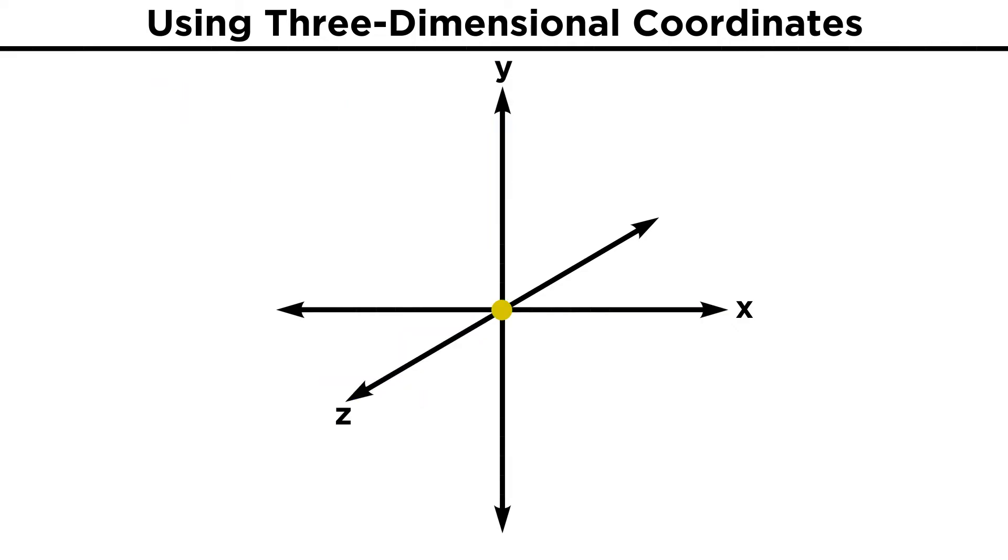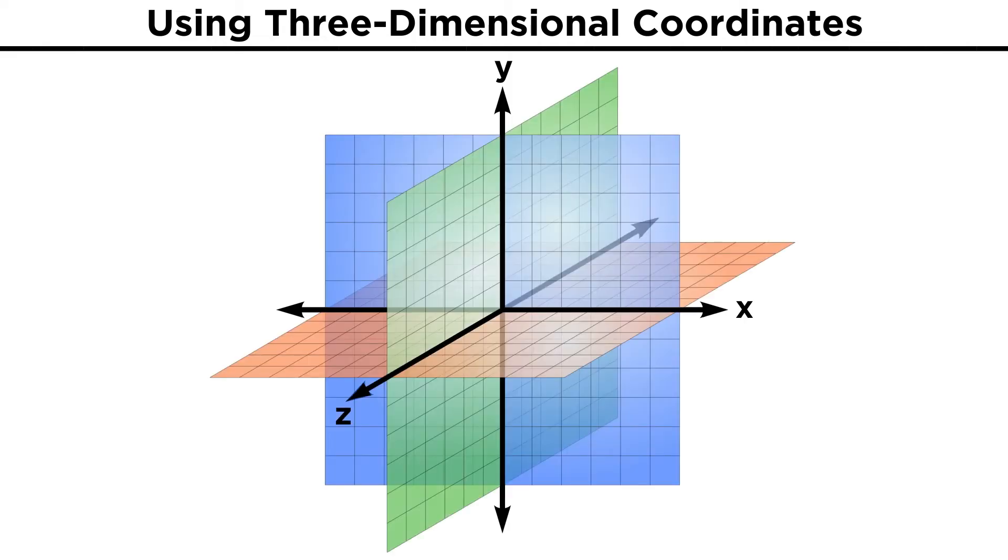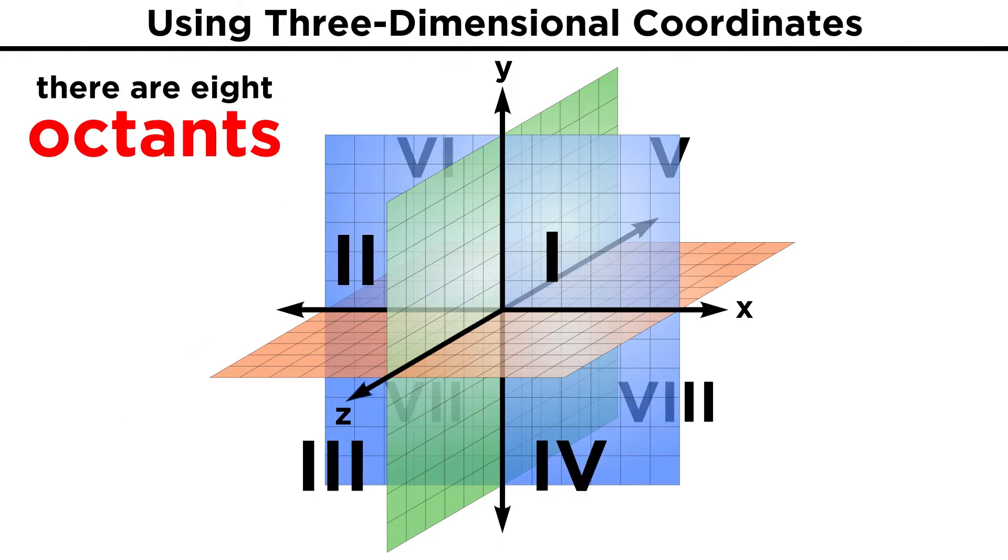With these axes all set, there is a lot to identify in this new space. First, there are now three coordinate planes instead of one. Those are the XY, XZ, and YZ planes, which each contain the two axes listed. Then instead of the coordinate plane which has quadrants, space is divided up into eight octants, with the first octant being the one where X, Y, and Z values are all positive.